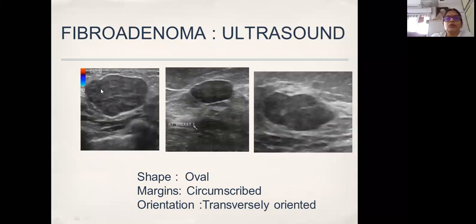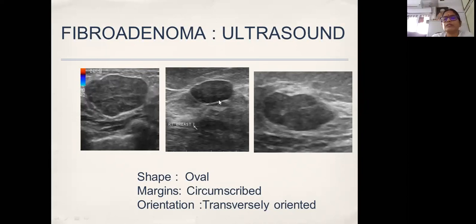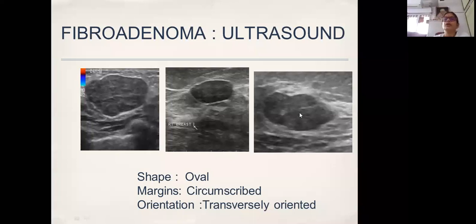If you see these images — the lesion is more transverse than vertical. If the transverse diameter is more than the vertical diameter, it is usually benign. The margins are quite circumscribed — very sharp and circumscribed, which is suggestive of a benign feature. If you look at the echogenicity in relation to the surrounding fat, it is darker — that is hypoechoic. These three things you look for: check the shape — is it oval, rounded or irregular? Look at the margins — circumscribed or irregular? And the orientation — transverse or vertical?